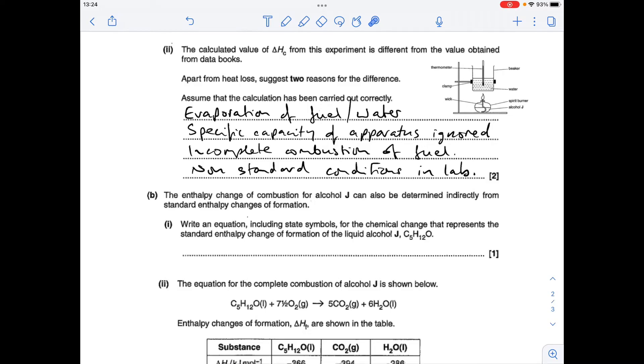Next part, we've got to come up with reasons why the experimental value for the enthalpy change of combustion is different from the data book value. I've just copied the diagram of the apparatus again. So apart from heat loss, that's a bit too obvious, so we can't go for that one. So I've gone for four answers - you only had to give two.